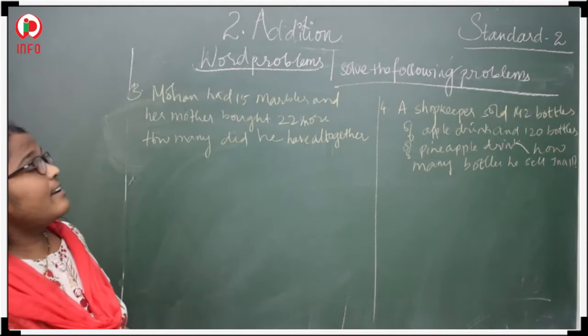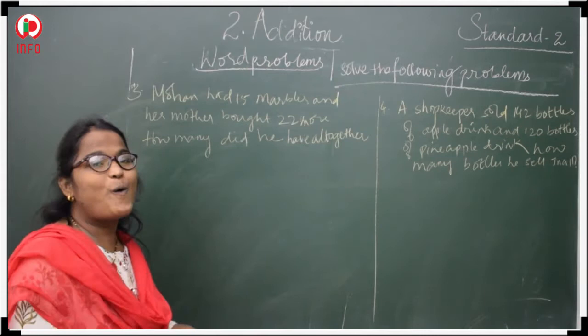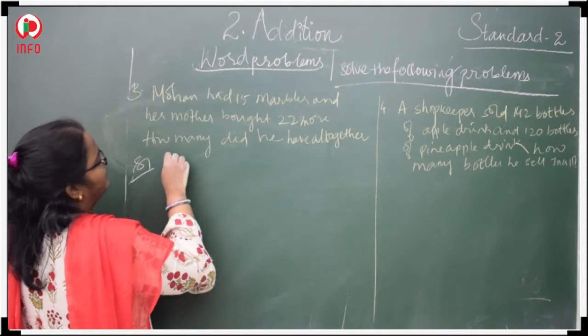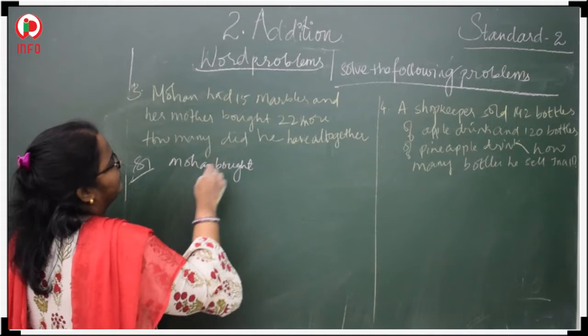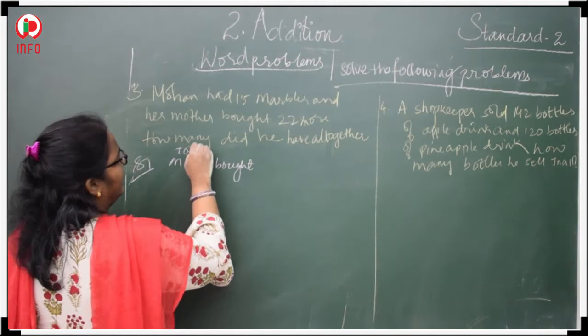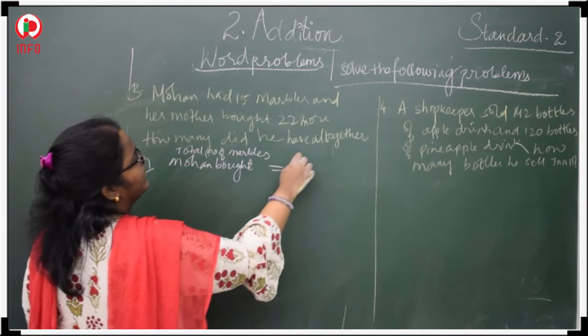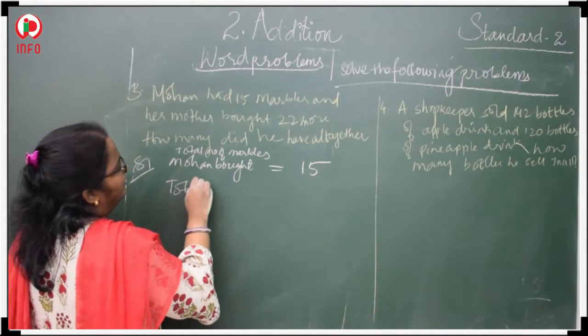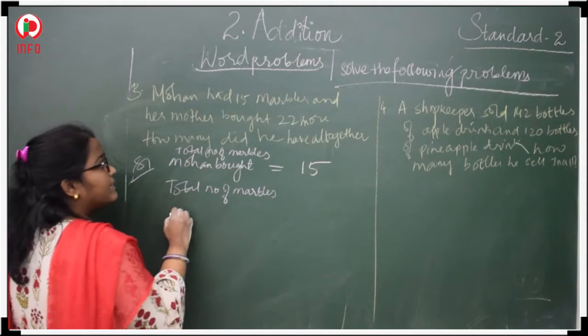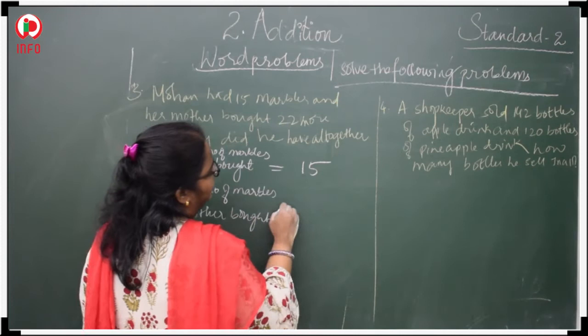Mohan had 15 marbles and his mother bought 22 marbles more. Total number of marbles Mohan bought is equal to 15, and his mother bought 22. 5, 6, 7, 2 plus 1 is 3.